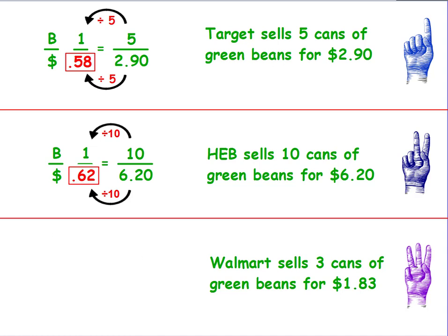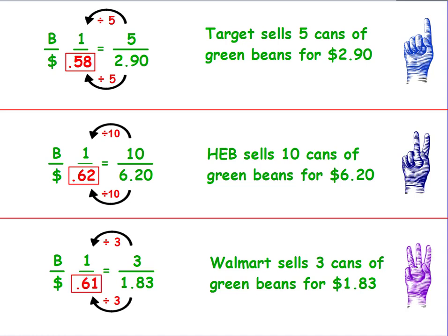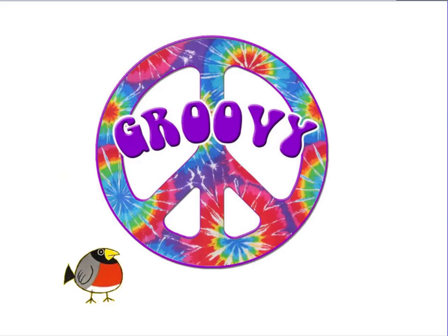Now for Walmart: set up your word fraction with the first ratio and question mark for what I'm trying to find. I know it sells 3 cans for $1.83. Going from what I know to what I don't, it gets smaller, so I divide by 3. Whatever I do to the top, I do to the bottom. One dollar and eighty-three cents divided by 3 is $0.61. Comparing all three, Target has the better buy at $0.58 per can. You did a good job.